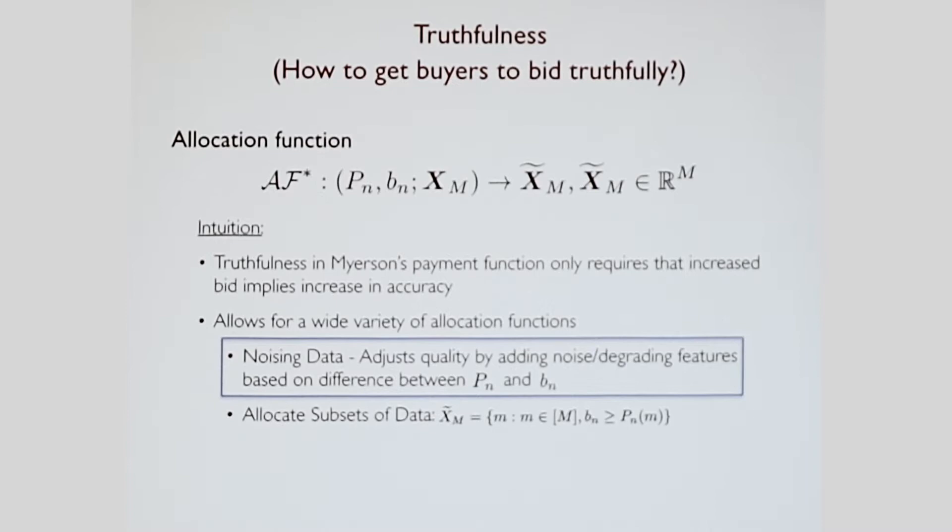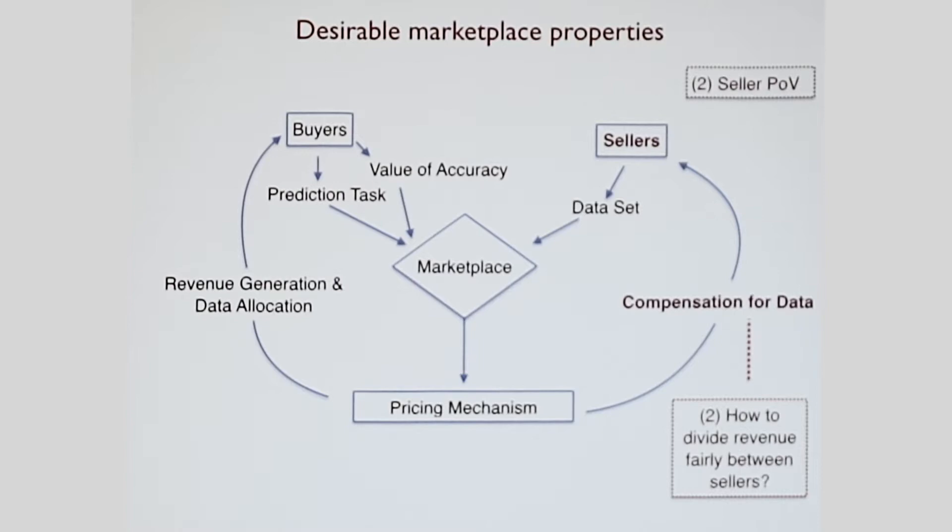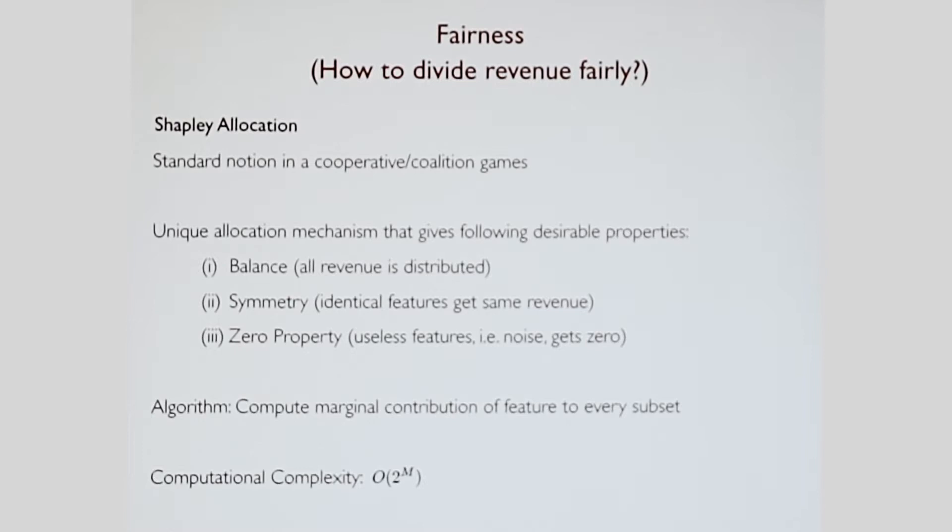We did the buyer's point of view. Now let's move on to the seller's point of view. It's how you divide this revenue fairly amongst the various sellers. This actually was a favorite part of this work for me. A standard notion in cooperative coalition games is something called the Shapley value. It's the unique allocation mechanism that gives you these following properties: balance, which is that all revenue that is generated is divided amongst the different sellers; symmetry, which means if there are two different sellers selling the exact same feature, they get the same revenue; and third is zero properties - if I'm just selling Gaussian noise into this market, I get nothing. What's the algorithm? You take a feature, you take a power set of the M minus one other features, you look at the average gain you get on each of those power sets, you take the average and that's the Shapley allocation. This was designed in the 1950s, but it runs in exponential time. That's not very good.